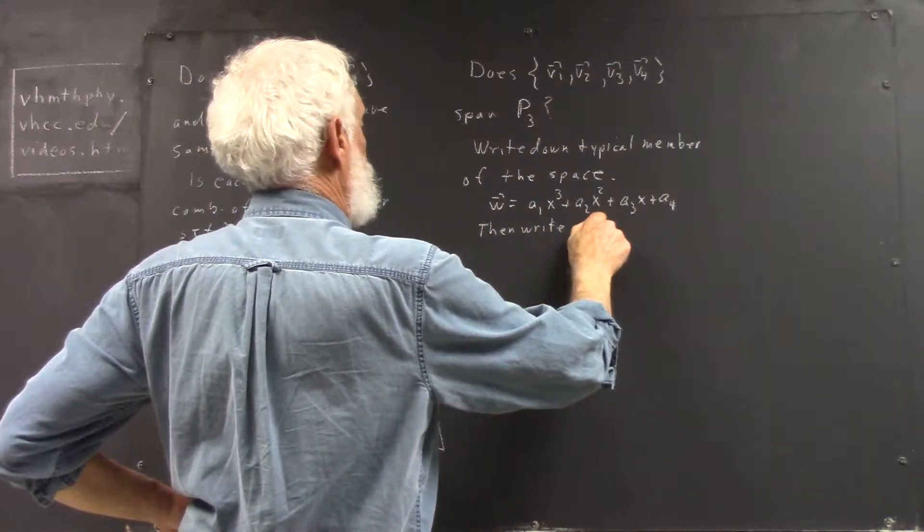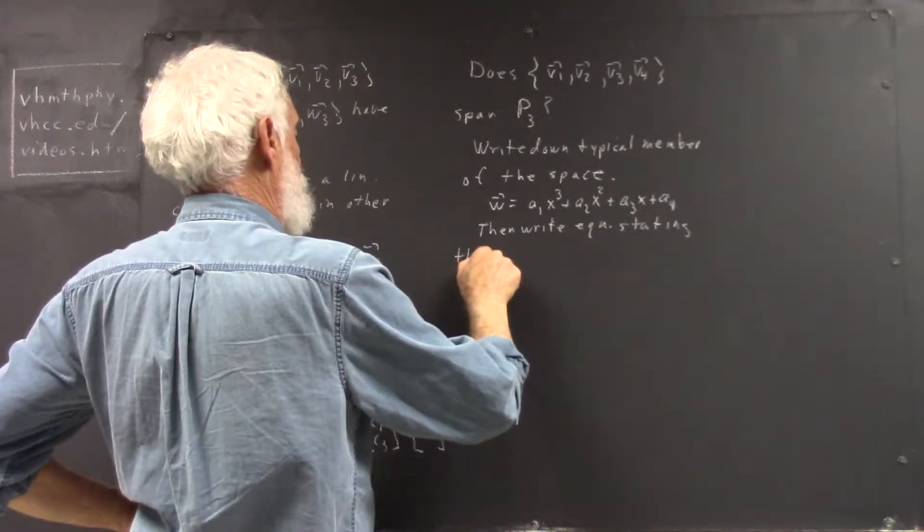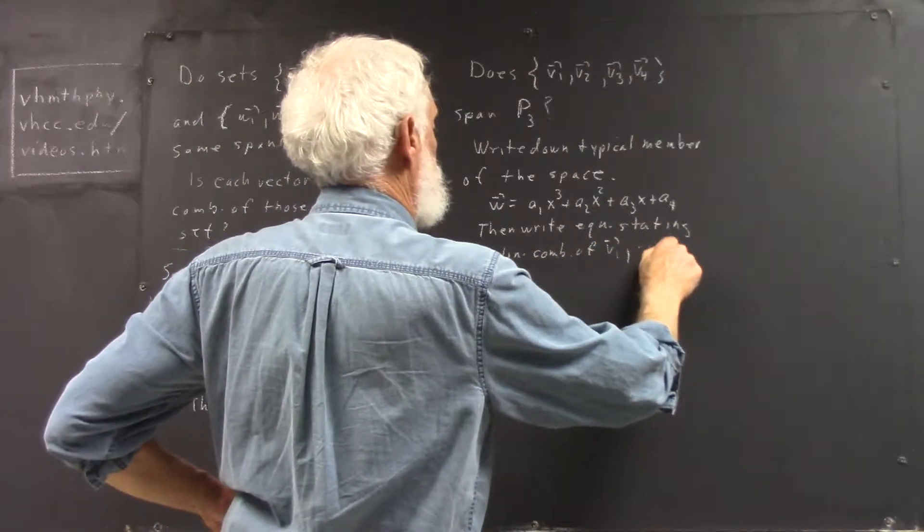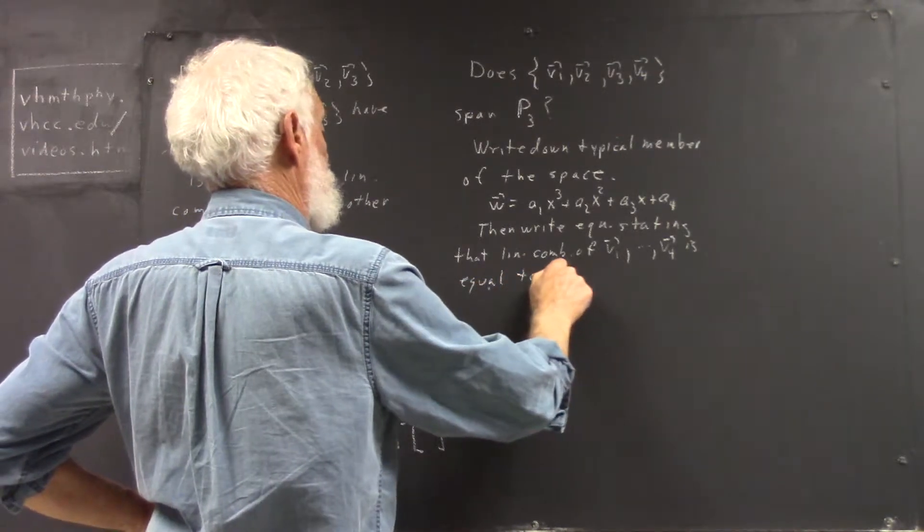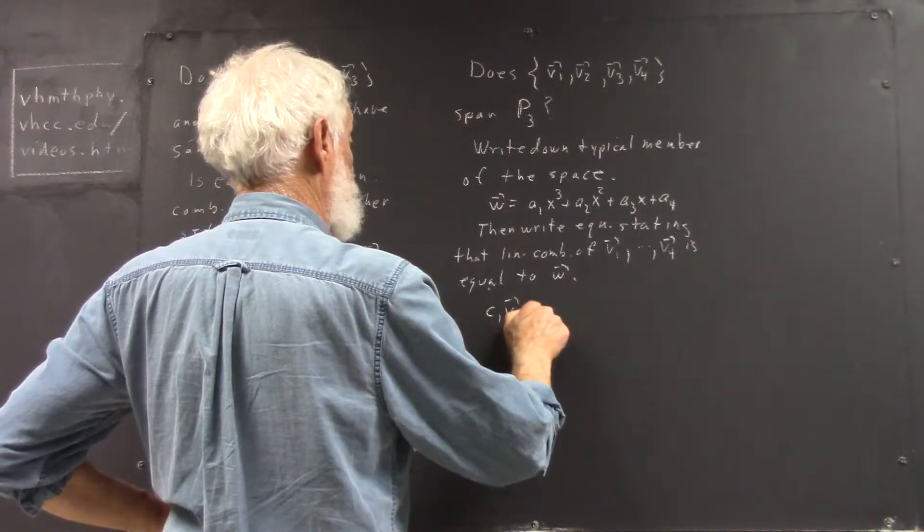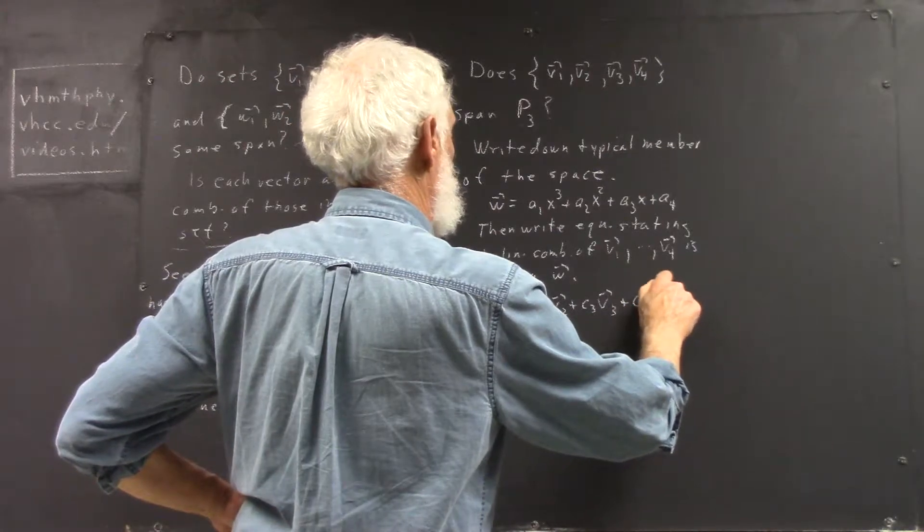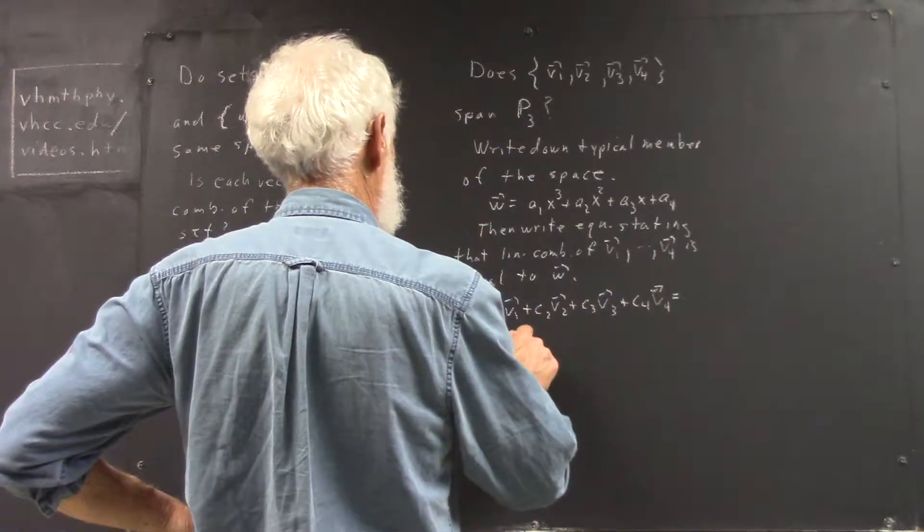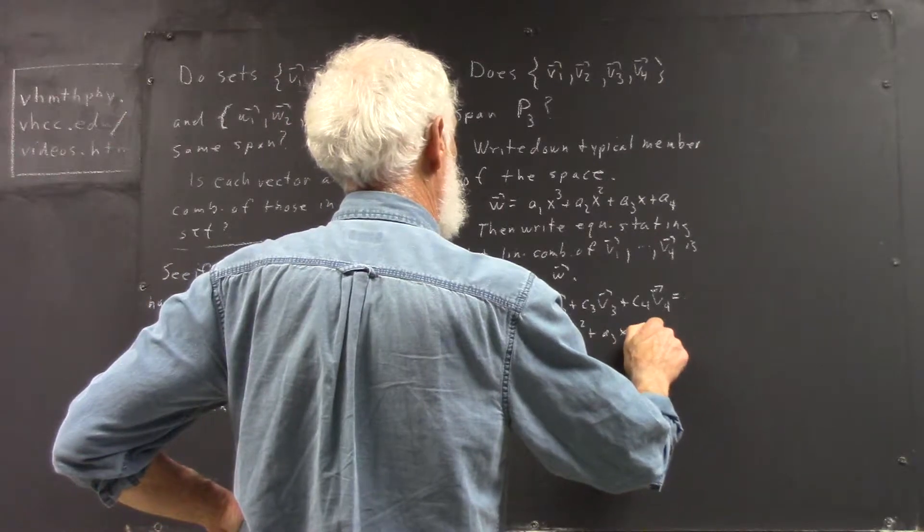Then, write the equation stating that a linear combination of V1 through V4 is equal to W. So, I'll write C1V1 plus C2V2 plus C3V3 plus C4V4 equals W. In this case, that would be a1x cubed plus a2x squared plus a3x plus a4.